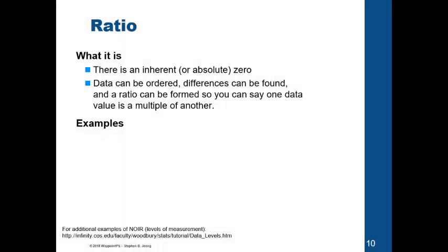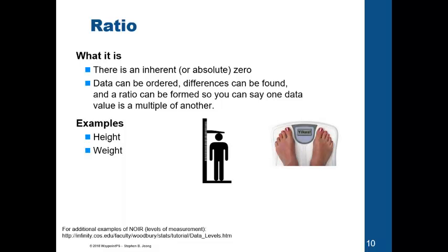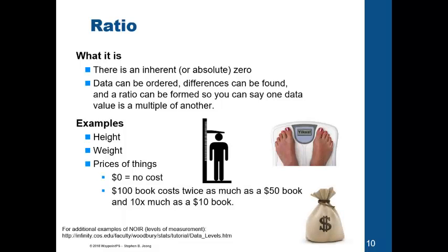Here, with ratio level of measurement, we can say those things. That's because there's an inherent zero or absolute zero. We can order the data. We can assume that the difference between, we know that the gap or the distance between the data points are equal. And, we can also calculate multiples of one data over another. So, height is a perfect example, where we have zero, absolute zero. And, we can say that a person who is two feet tall is half as tall as someone who is four feet tall. Same thing with weight and prices of things. We can say there's zero cost, $50, $100, for whatever it is. We can say that $100 is twice as expensive as a $50 item, book in this case.